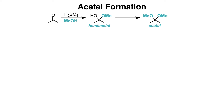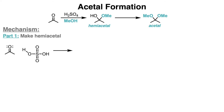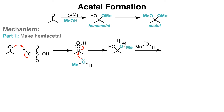Acetal formation is very similar to hydration. In acidic conditions, an aldehyde or ketone can react with two molecules of an alcohol to first form a hemiacetal, which then forms an acetal. The mechanism is in two parts. First, the carbonyl group is protonated, which makes the carbon atom more electrophilic. Then nucleophilic attack of the alcohol occurs to form an oxonium intermediate. Then the oxonium is deprotonated to form a hemiacetal.